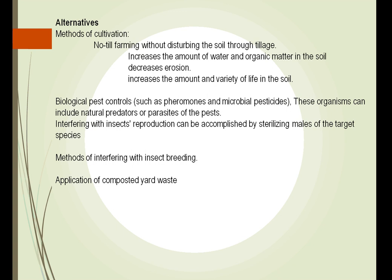We can use biological pest controls, such as pheromones and microbial pesticides. The boll weevil, until recently, had decimated cotton crops. We've now learned that although it's hard to kill the boll weevil directly, we can use a pheromone to attract it to a small portion of the cotton crop, and then use strong methods to kill it off.